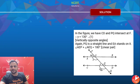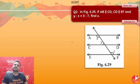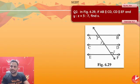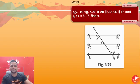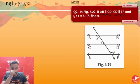Now the next question: in Figure 6.29, if AB is parallel to CD, and CD is parallel to EF, and y is to z is 3 is to 7, find x. Since AB and CD are parallel and CD and EF are parallel, we can clearly say AB, CD, and EF are all parallel to each other.